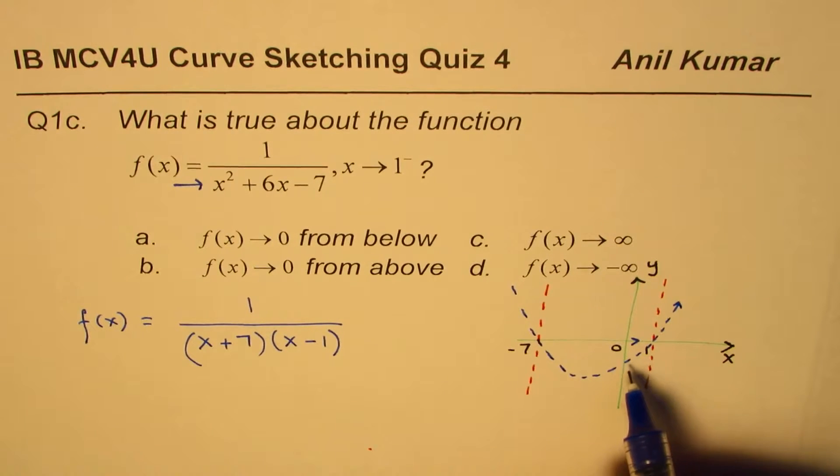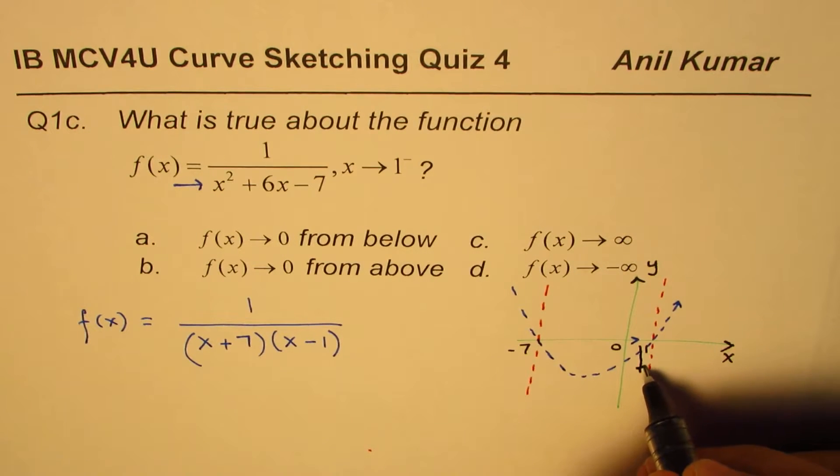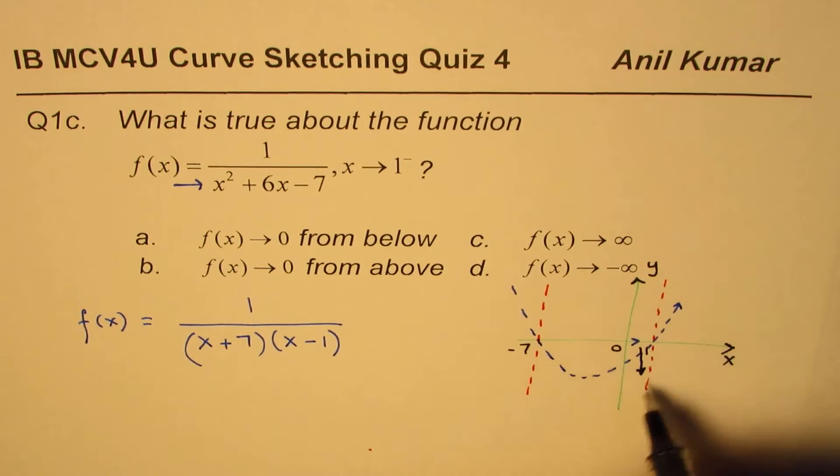Now, when you are doing the reciprocal, it is negative. So, you are approaching infinity for sure, but towards negative, because the reciprocal for this is going to be negative. So, it is kind of like this. And, therefore, the option is D.